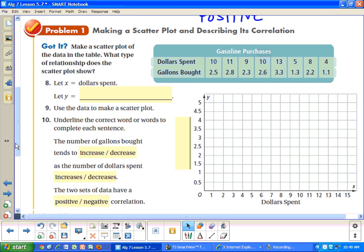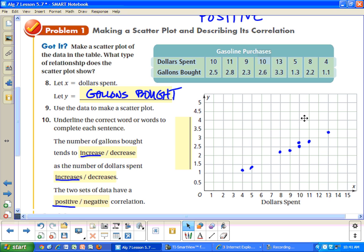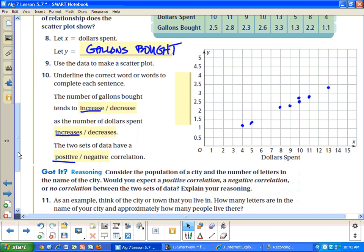So, go ahead and try it. I'll pause now. You can plot the graph. You can answer the questions. All right, here's what your graph should look like. And since the gallons increase as the dollars spent increase, we have a positive correlation.